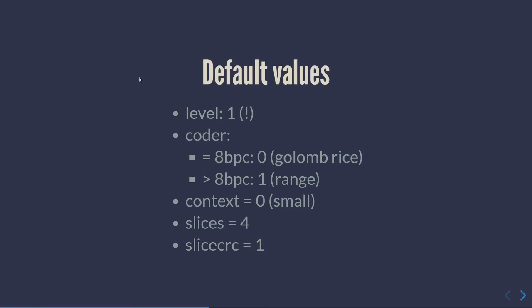Wrapping up the FFV1 parameters: the default version is version one, not version three — so you have to explicitly say 'make an FFV1 version 3 file.' The default coder for 8 bits per component is Golomb-Rice; for more than 8 bits per component you'll get Range coder anyway. Context is small — tweak it if you're into it and let me know benchmarking results. Slices default to four; my personal favorite is 24 slices, which divides nicely by CPU cores for encoding/decoding performance. With slice CRCs enabled, your file is more robust.